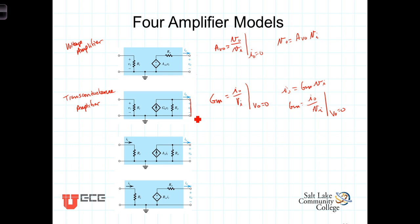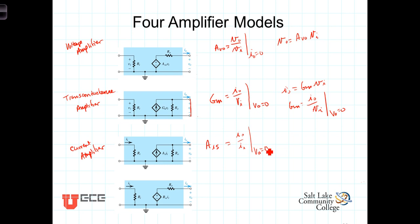Our third amplifier model is known as a current amplifier and consists of a current-dependent current source, where the current source is dependent upon the input current. We can define the unloaded gain term A sub Is as being equal to the ratio of Iout over Iin, evaluated at Vout equaling 0. This gain term is defined in terms of a short-circuited current, where Iout equals A sub Is times Iin.